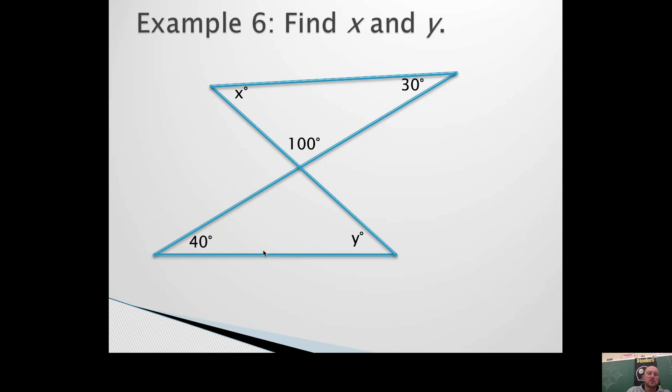We only know one angle measure in this triangle. We know two angle measures in this triangle. So we could use our triangle angle sum theorem to figure out the value of x. 100 plus 30 is 130 degrees. We know every triangle has to have 180 degrees, so the value of x would be 50.